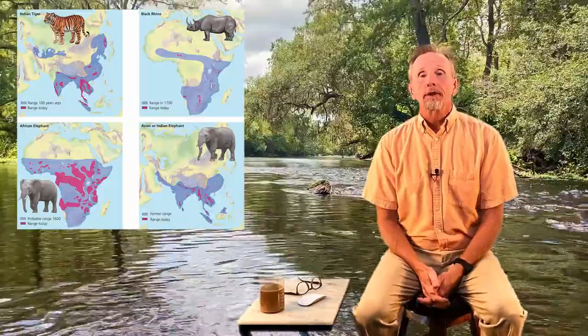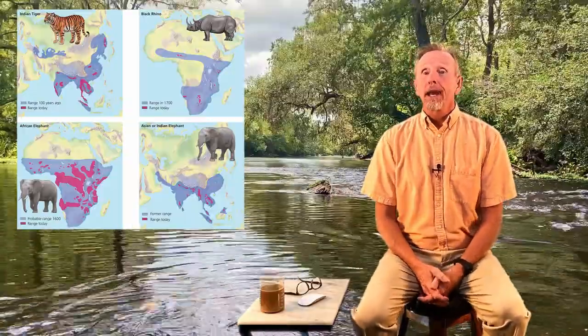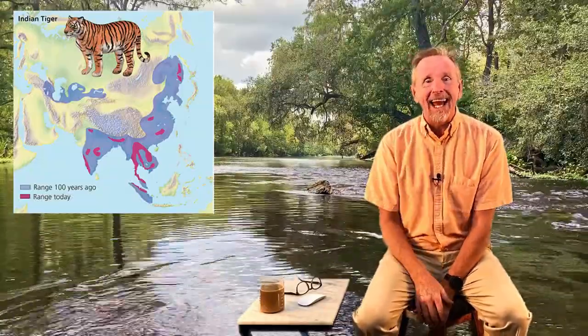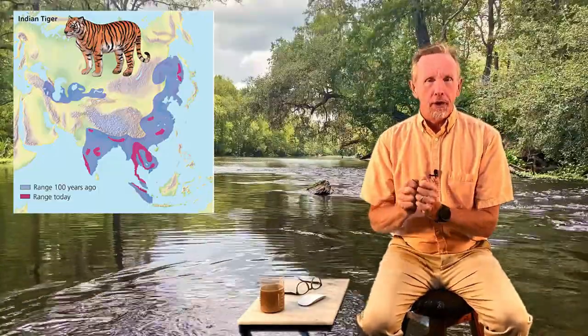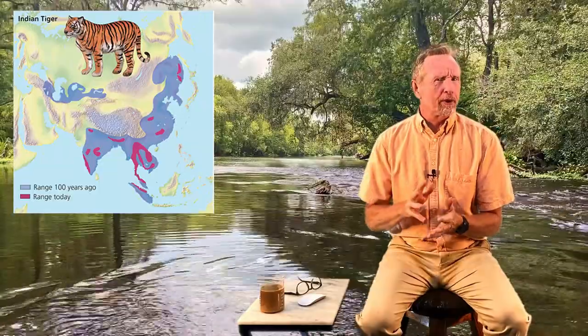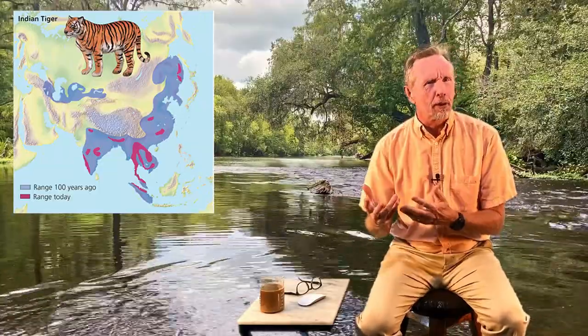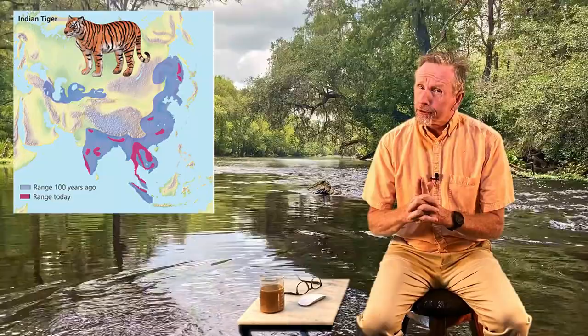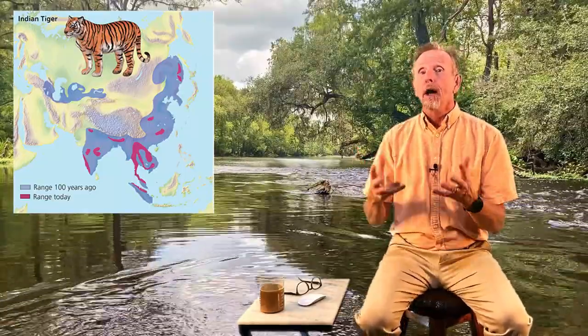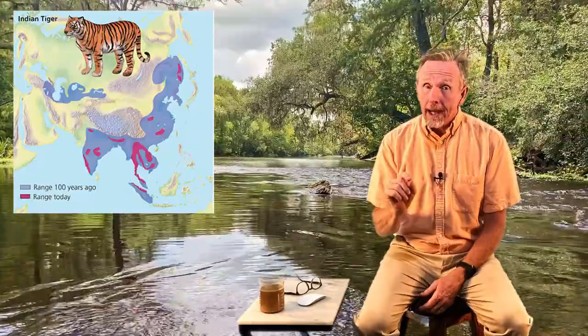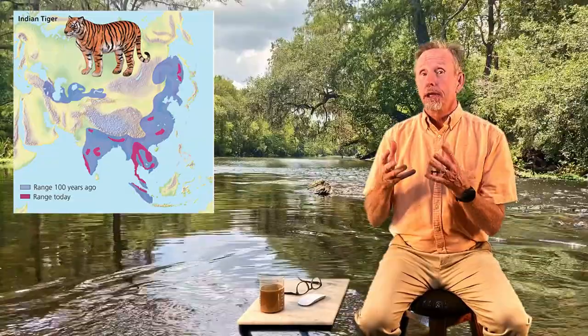Up here on the board, let's look at habitat loss. We have the Bengal tiger — the one that goes through most of India and Asia. In blue, that is what its range used to be. Some say it's what it was 100 years ago, some say this is what it was in the 1700s, but historically the blue has been the habitat range of this animal. The red is its current range now.